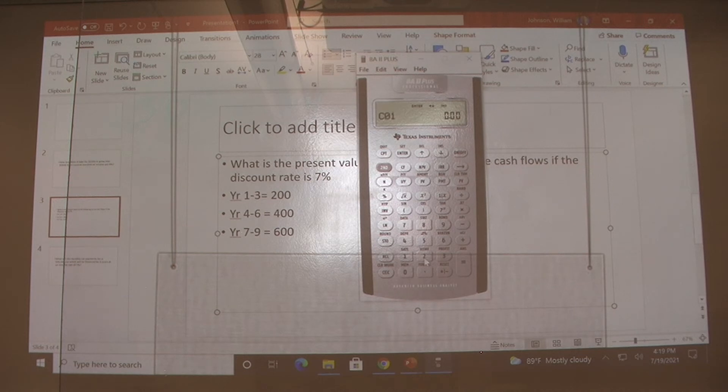What's our first cash flow? $200. Enter. But in this case, instead of frequency one, how many times do we get paid $200? Well, we get paid $200 three times, so we enter three.